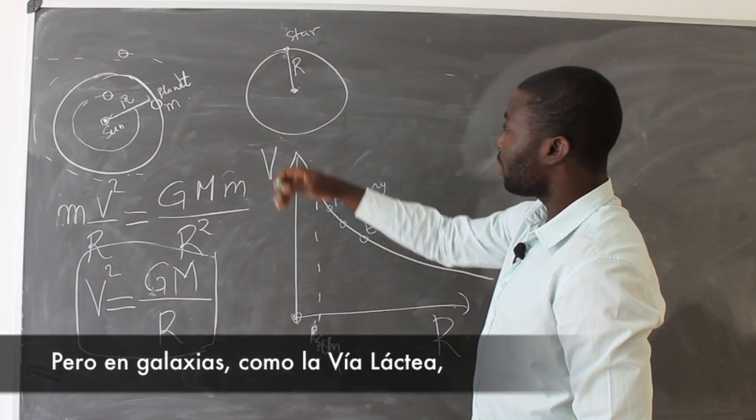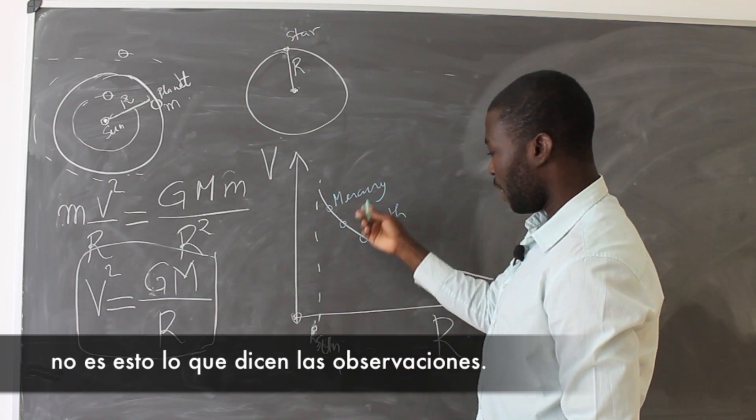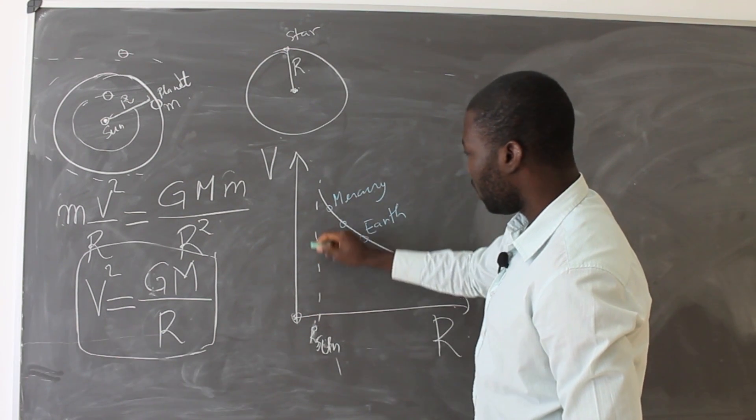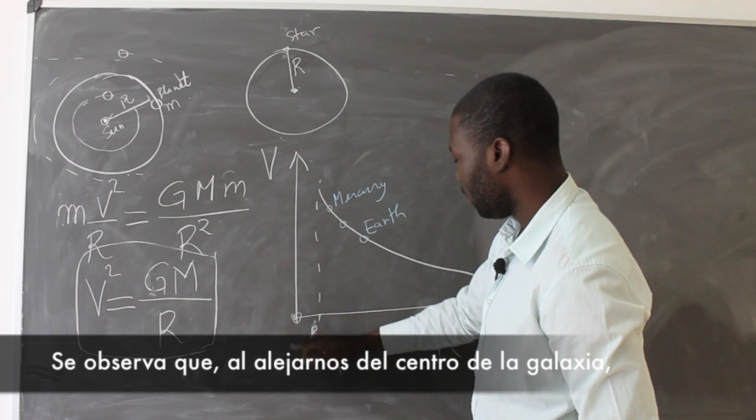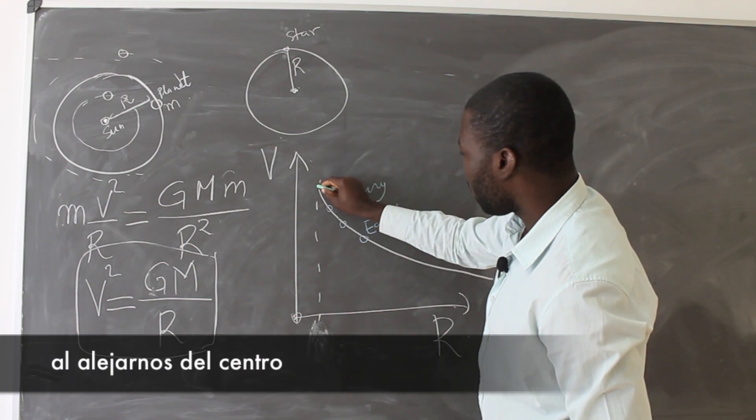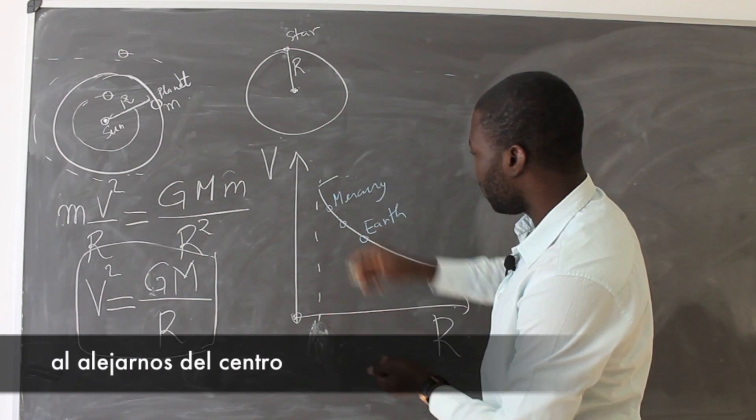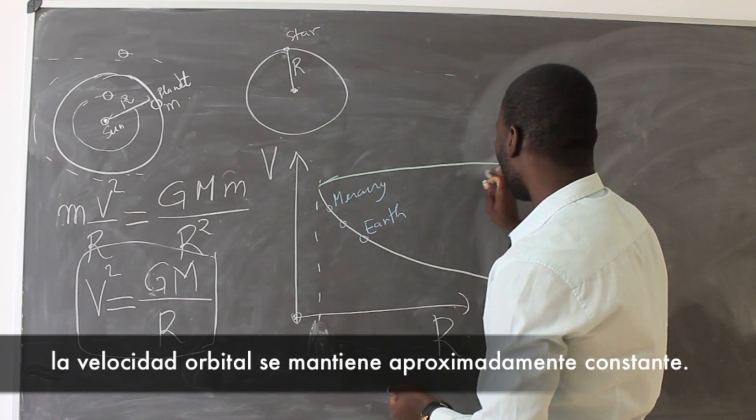But in the galaxies, like Milky Way, that's not what has been observed. For instance, it has been found that as you go far away from the center of the galaxy, as you go far away from the center, this orbital velocity tends to be constant.